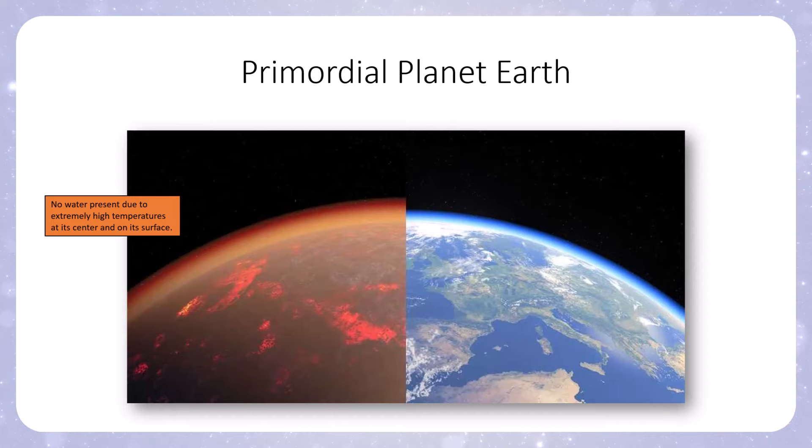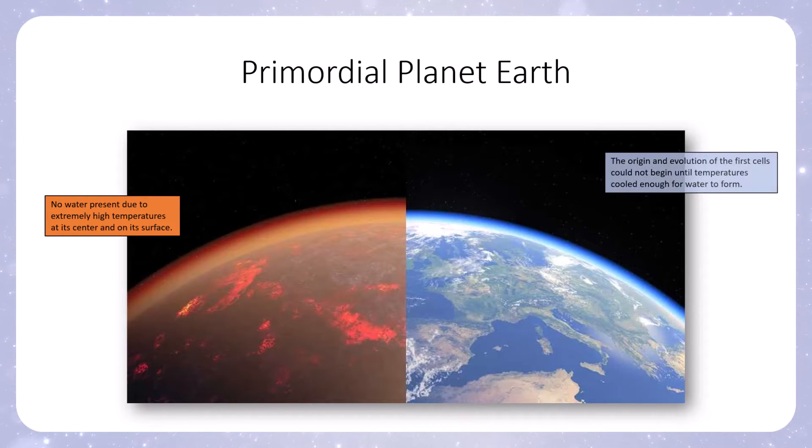Not only did it have to form, it had to cool to allow that water to solidify from gas and remain in its states in order for that water cycle to begin. The origin and evolution of the first cells could not have begun until temperatures cooled enough for water to form.